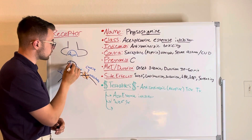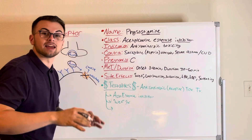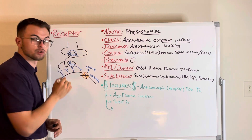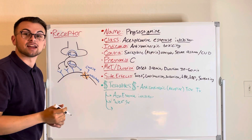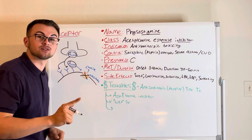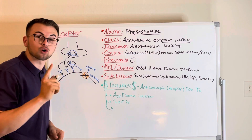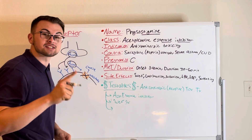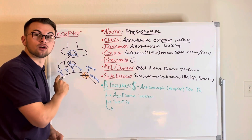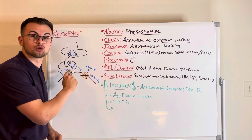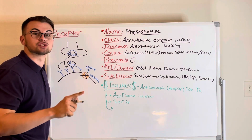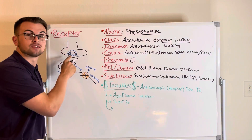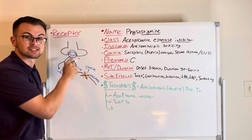We will have more acetylcholine in our synaptic cleft to bind to our acetylcholine receptors. This is a good thing to do if we have given our patient too much anticholinergic medication like atropine. Because atropine is competing for the same receptor as acetylcholine, physostigmine allows us to increase our odds of winning by increasing the amount of acetylcholine in the synaptic cleft.